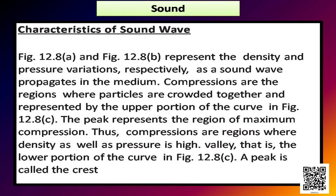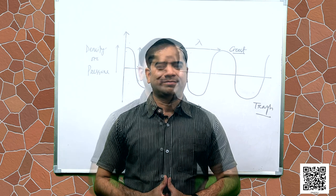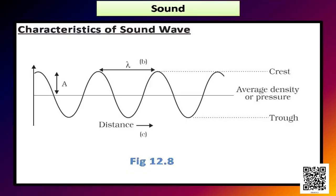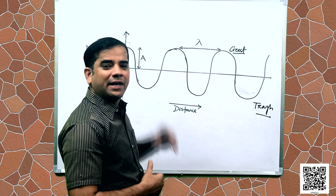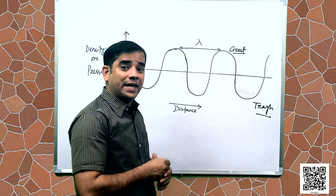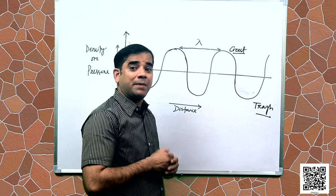Compressions are the regions where particles are crowded together and represented by the upper portion of the curve. I have drawn the figure as given in figure 12.8c of your book. The peak represents the region of maximum compression. Thus, compressions are regions where density as well as pressure is high.